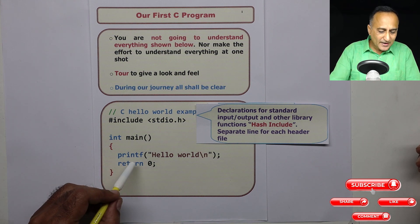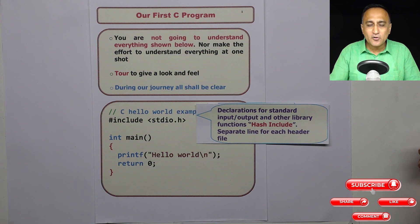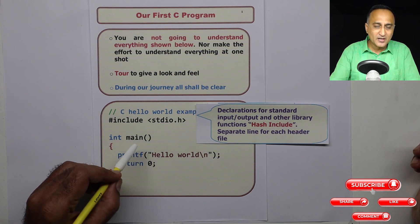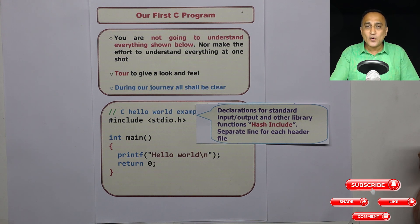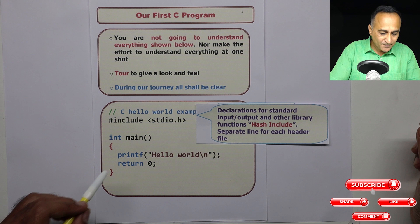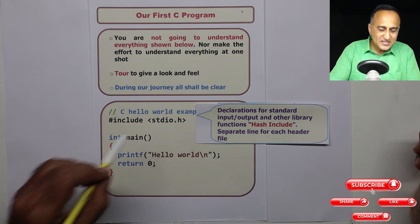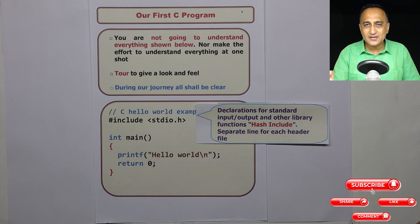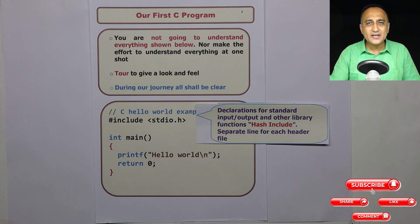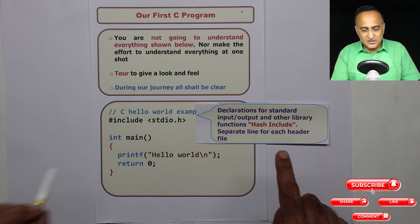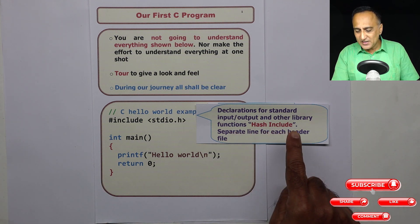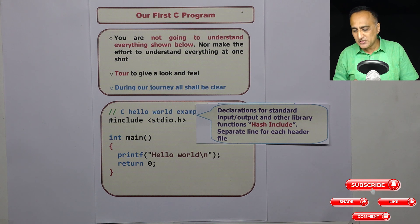When the compiler encounters printf, it does not bother about finding the code of printf, because the linker will find the object code of printf and join it with all of this code. So printf is not written by me, but in this header file I need to inform the compiler that printf is being used but is not written by me. The C library is going to provide it, and later on I will link it using the linker. This header file contains declarations for standard input and output library functions like printf and scanf.